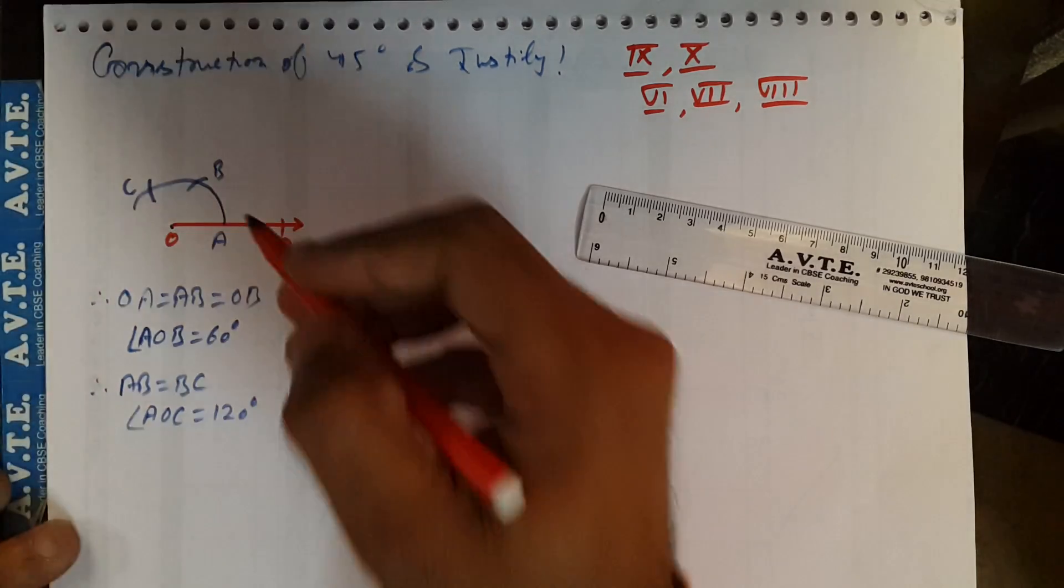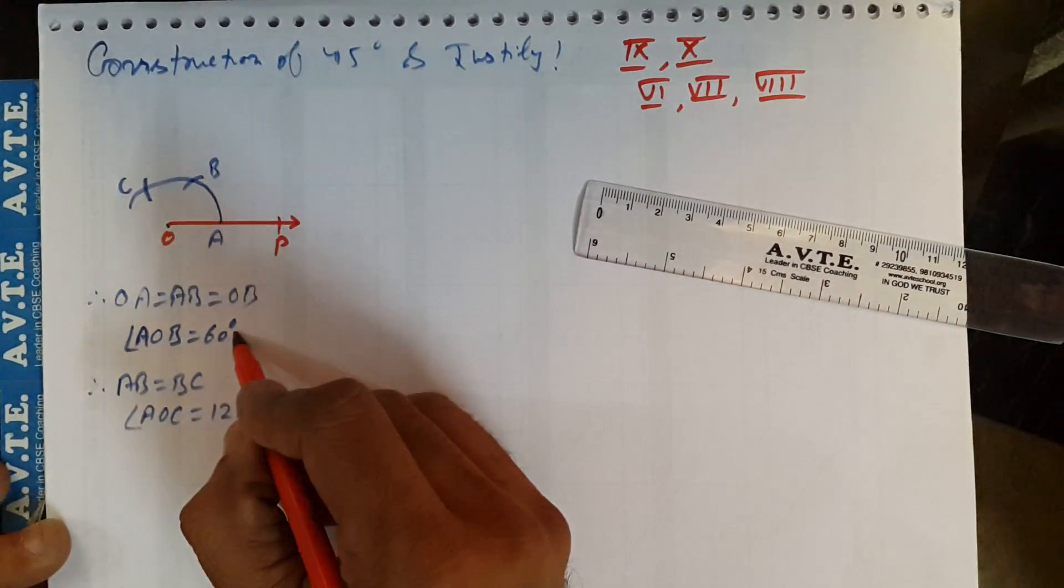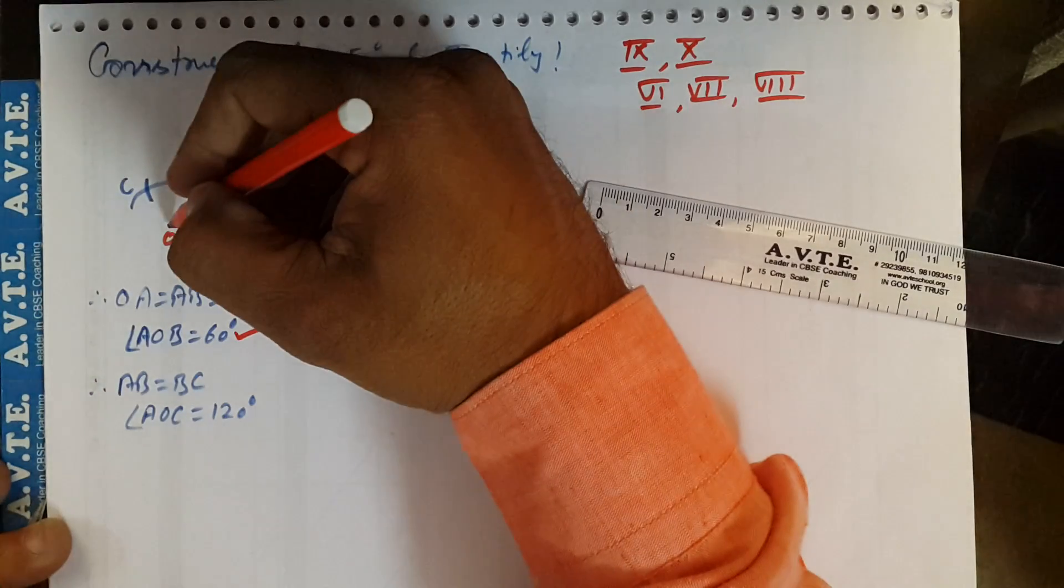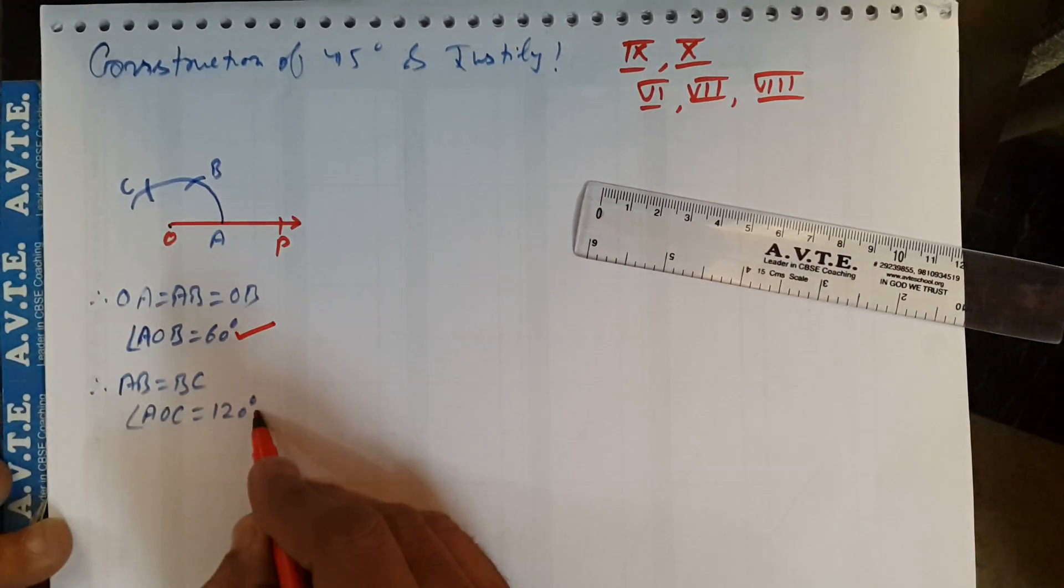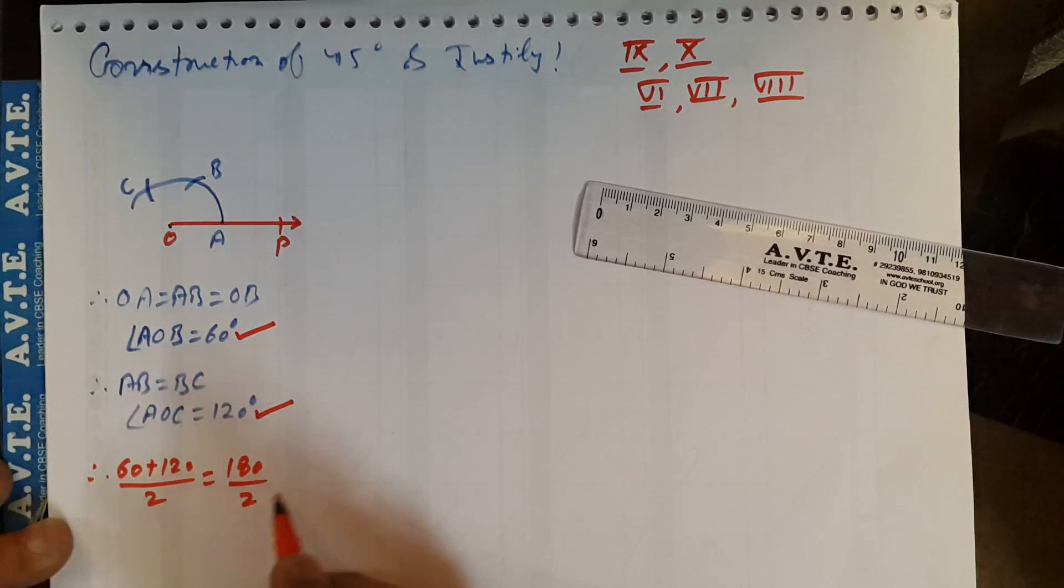When you join OB, then angle AOB is 60. When you join OC, your angle AOC is 120. When you bisect them, your answer will be 90 degrees.